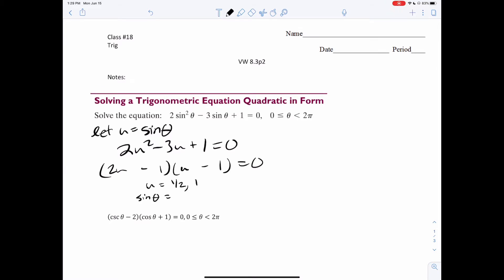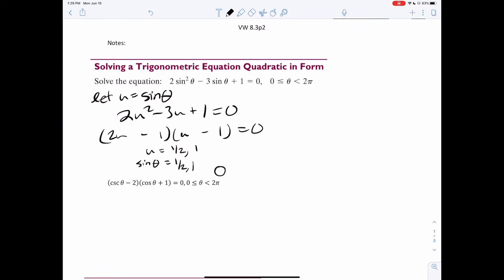So sine theta must be 1 half or 1. And now I'll just do your circle values. If you want you can draw your circle like this. 1 half happens right here and here. And then 1 happens right there. So our three answers are pi over 6, 5 pi over 6, and pi over 2.